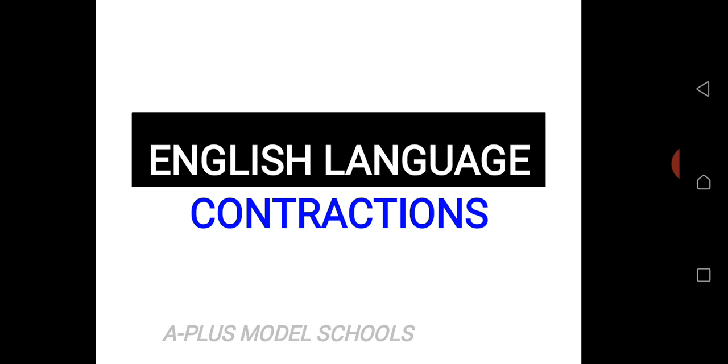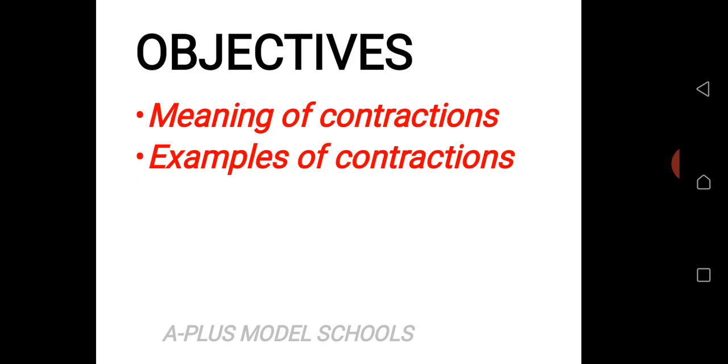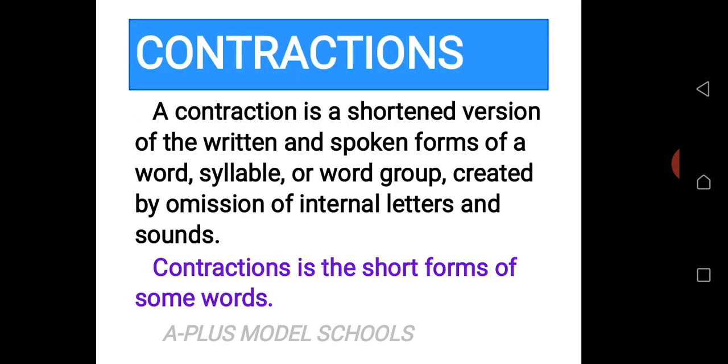Today I'll go to the meaning of contractions and examples of contractions. What is contractions? A contraction is a shortened version of the written and spoken forms of a word, syllable, or word group created by omission of internal letters and sounds. I'll take it again. A contraction is a shortened version of the written and spoken forms of a word, syllable, or word group created by omission of internal letters and sounds. In a simple term, you can say contraction is a short form of some words. That is a simple definition of contraction.